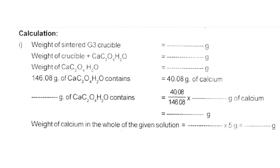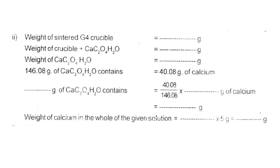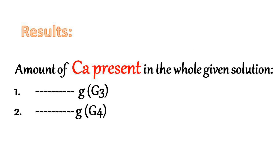Since we started the experiment with 20 ml, we multiply by 5. Therefore, the weight of calcium in the whole of the given solution equals that weight multiplied by 5. Similarly, the weight of calcium in the whole of the given solution is also determined using the G4 crucible with the same calculation. Therefore, the amount of calcium present in the whole of the given solution is reported as dash grams from the G3 crucible and dash grams from the G4 crucible.